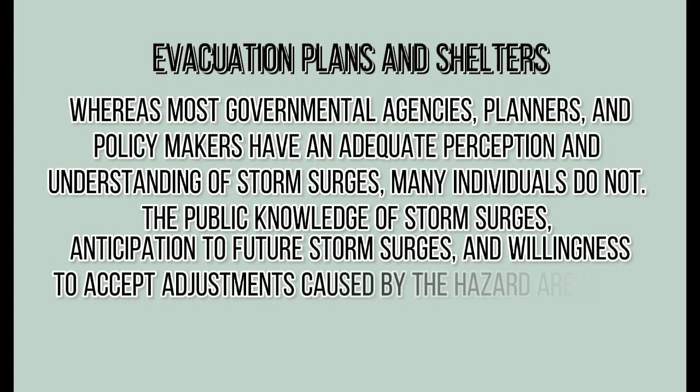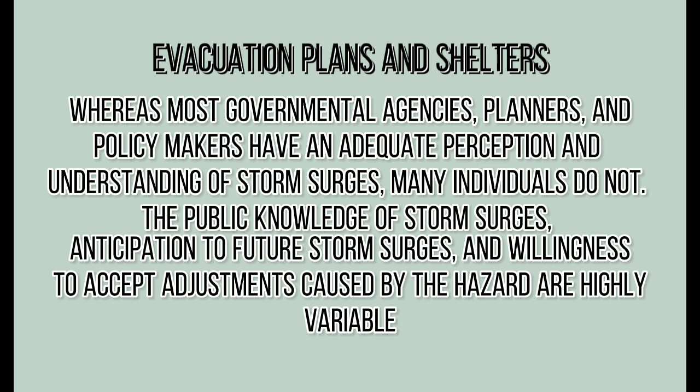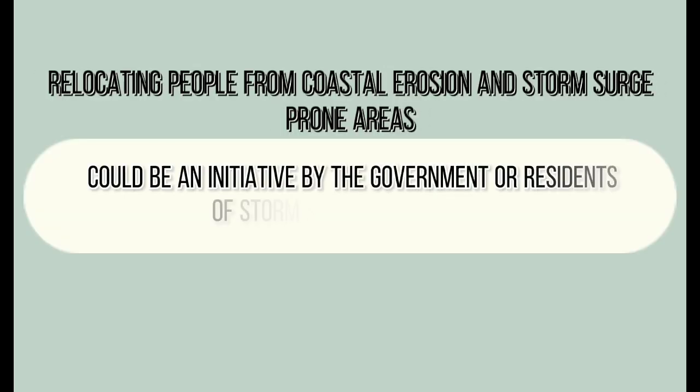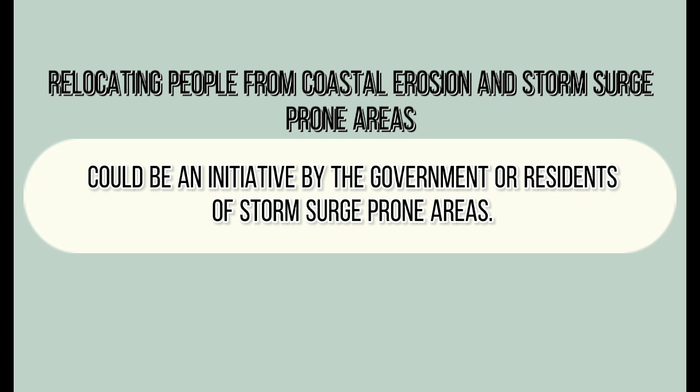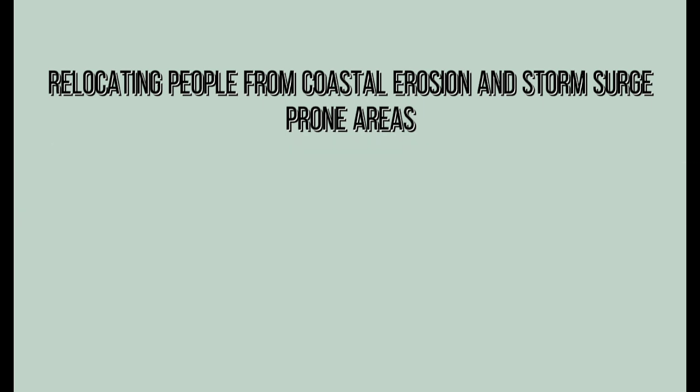Mitigation and adaptation of coastal hazards includes evacuation plans and shelters. While most governmental agencies, planners, and policymakers have adequate understanding of storm surges, many individuals do not. It is very important to make plans for shelters and evacuation areas to keep families safe. Relocating people from coastal erosion and storm surge-prone areas can be an initiative by the government or residents.